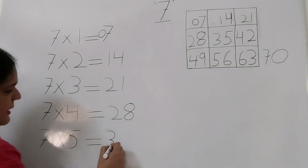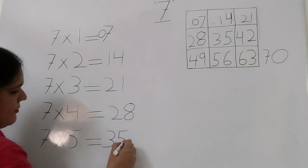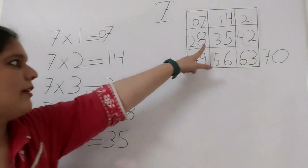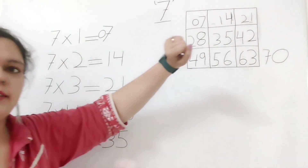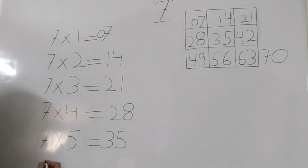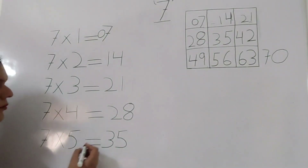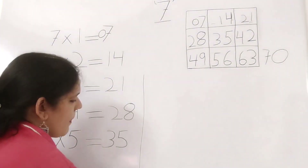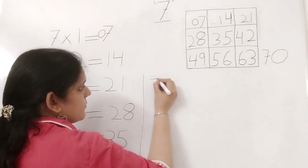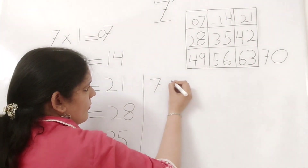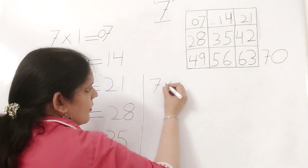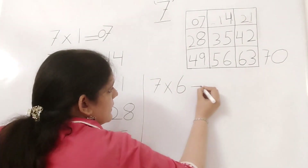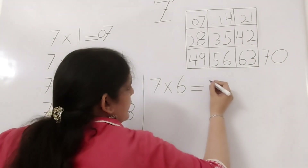7 times 4 we have 28. 7 times 5 is 35. Here we have 35.